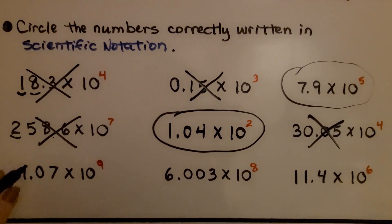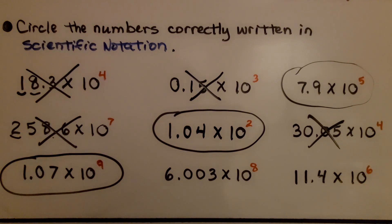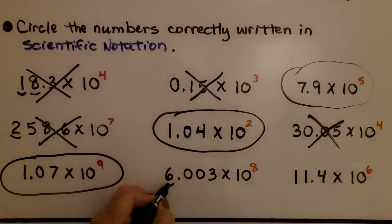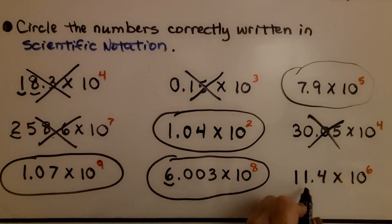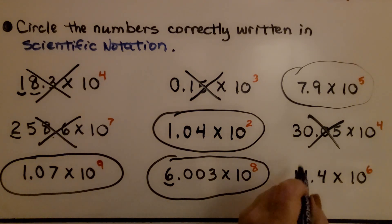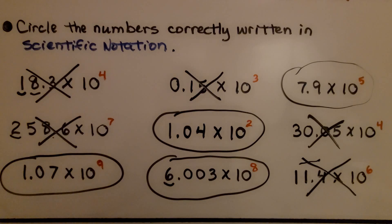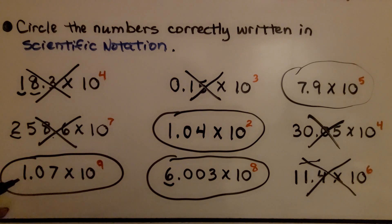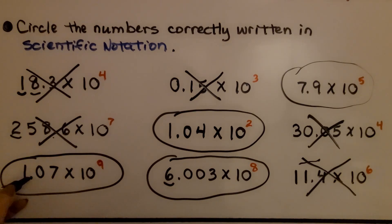This has a 1 in the ones place and then a decimal point — yes, this is in scientific notation. We have 6.003 — yes, we have a digit in the ones place that is greater than or equal to one and less than ten — this is in scientific notation. Here we have a 1 in the ones place and a 1 in the tenths place — that's not scientific notation. So, we had 4 that were correctly written in scientific notation. We can easily identify them because we look at this digit then the decimal point — it needs to be greater than or equal to one and less than ten, with the decimal point between the ones place and the tenths place.